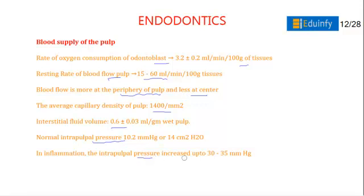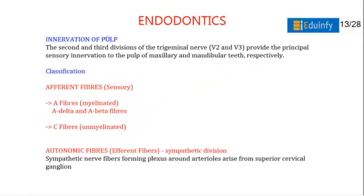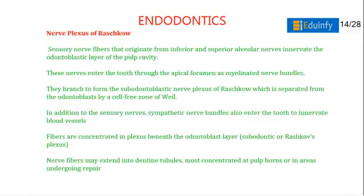In inflammation, intrapulpal pressure increases up to 40 to 45 mmHg. The second and third divisions of the trigeminal nerve provide sensory innervation to the pulp of maxillary and mandibular teeth. There are afferent sensory fibers of two types: A fibers (myelinated) and C fibers (unmyelinated). A fibers are further divided into A-delta and A-beta. Autonomic efferent fibers are of the sympathetic division, forming around arterioles, arising from the superior cervical ganglion. Sensory nerve fibers from the inferior and superior alveolar nerves innervate the odontoblastic layer, entering through the apical foramen as myelinated fibers and branching to form the subodontoblastic nerve plexus of Raschkow.